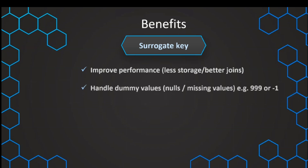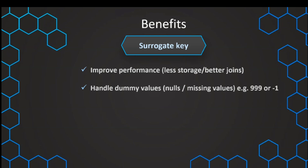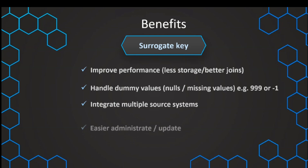We can also handle dummy values a lot better. If we have some missing values — for example, a date is not existing — we can simply create negative one or another very high number that refers to our dummy values, signaling that no value is available, and we can be more consistent with that. It's also very practical if we have multiple source systems that all have different numbers and sometimes duplicates. If two systems use the same number, it's very good to use surrogate keys to integrate those multiple source systems. In general, it's much easier to administrate and update those values, and we'll also see when talking about slowly changing dimensions that it's better to have those surrogate keys for updating values in our dimensions.